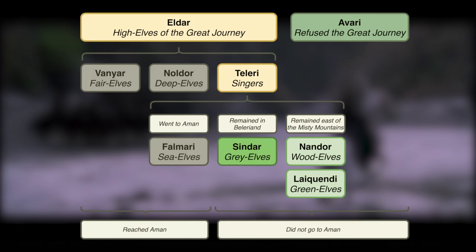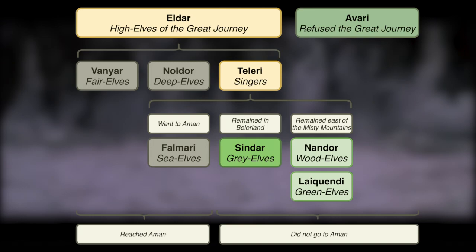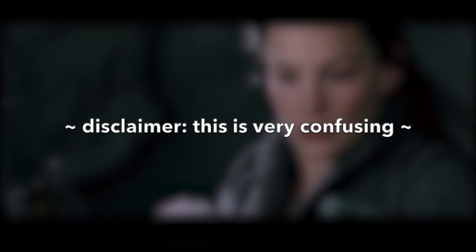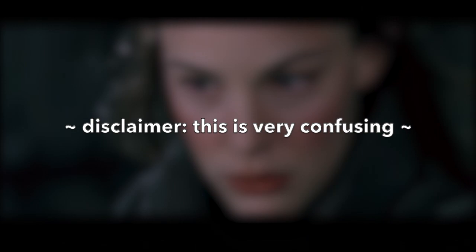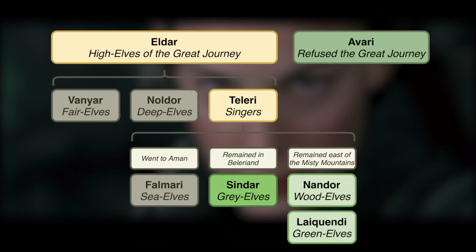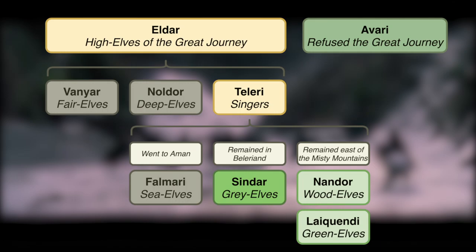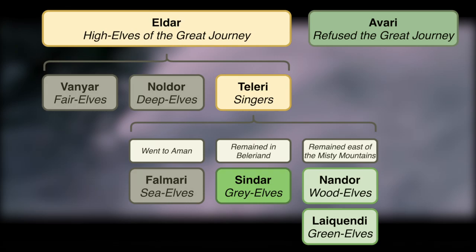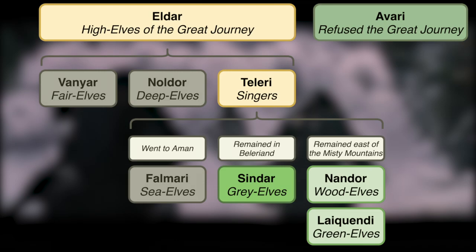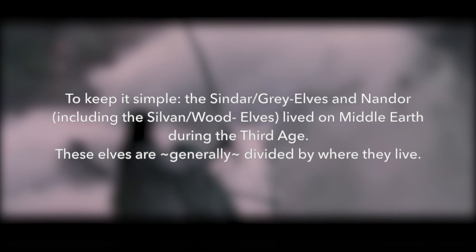After the Vanyar and Noldor elves had already left Middle-earth on the Great Journey into the West, all that was left were the Teleri elves. When this third clan of elves, the Teleri, left from the Grey Havens, they essentially ended up splitting into three groups. The group that actually left Middle-earth were the Falmari. The other two groups — the Sindar and the Nandor — ended up abandoning the journey, electing to stay on Middle-earth. By the Third Age, the Sindar and Nandor were intermingled, but basically the Sindar were the Grey Elves, while the Nandor included the Sylvan Wood Elves.